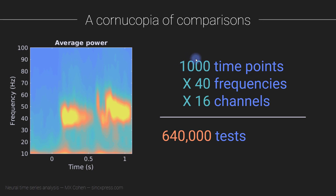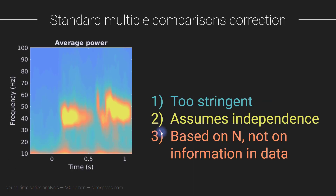For example, imagine you use Bonferroni correction and an effect isn't quite significant, so you down-sample the time points post-analysis from 1000 to 100. That gives you 64,000 tests instead of 640,000, making the p-value threshold more liberal — even though nothing in the actual results has changed. The same applies to frequencies: reducing them changes the number of tests, not the information content.